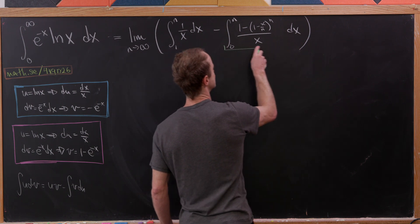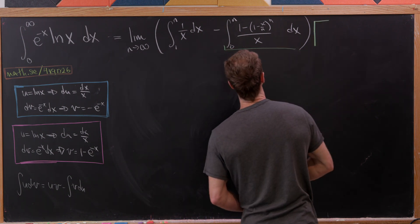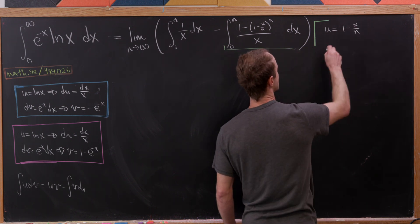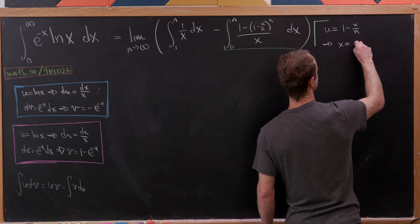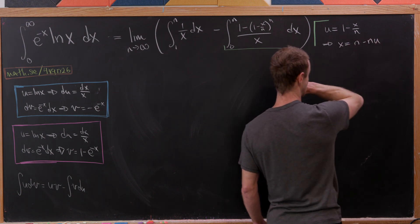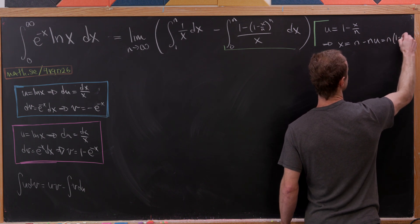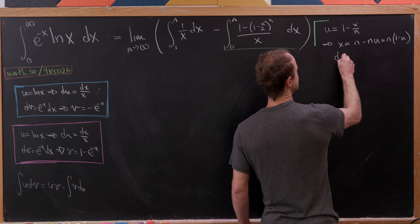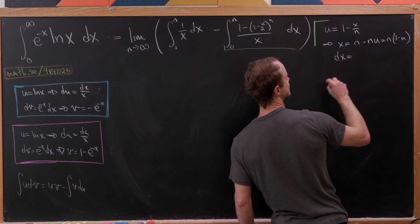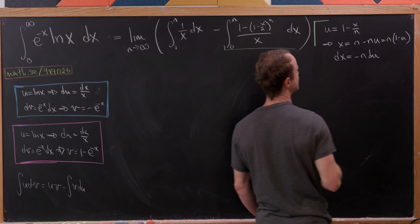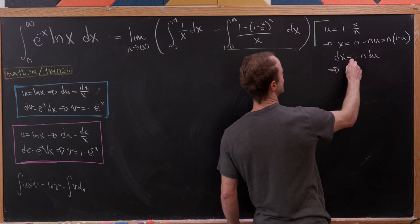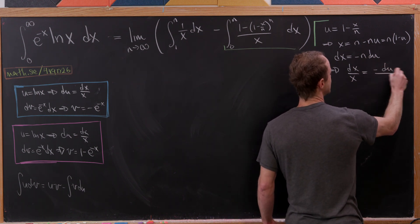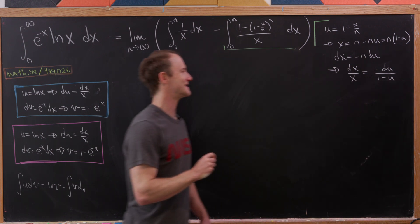The natural substitution is to let u equal 1 minus x over n. That means x equals n minus n times u, or in other words n times (1 minus u). That means dx equals minus n du. Now observe that dx over x is simply equal to minus du over (1 minus u) — the n's cancel — and it's natural to write it that way since we have a dx over x in the integrand.